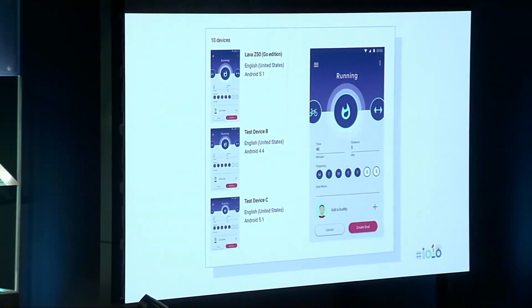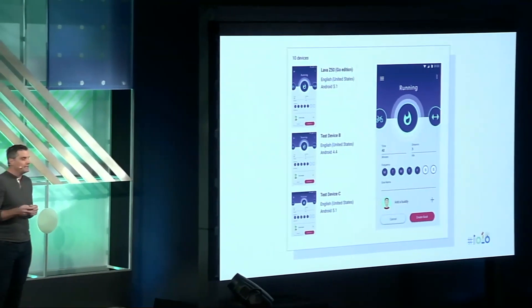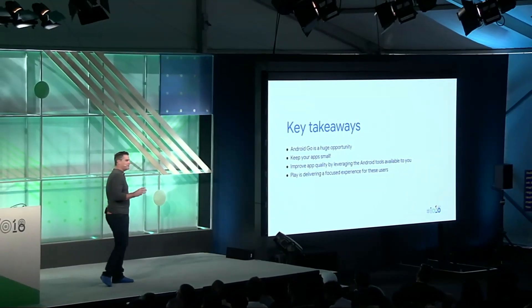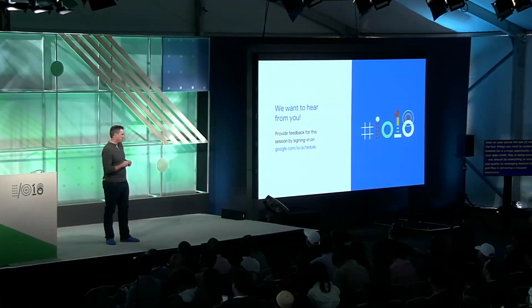We've also included details about Android Go devices in the Play Console pre-launch report. This allows you to check on your builds and understand how they're performing on actual Android Go devices on testbeds before you release to market. Be sure you incorporate a regular cadence with the console pre-launch report as part of your normal QA and release management process. The four things you need to remember: Android Go is a huge opportunity; keep your apps small; do everything you can to improve app quality by leveraging the Android tools; and Play is delivering a focused experience for these users. Thank you everyone — if you have any questions, the four of us will be up here at the front.